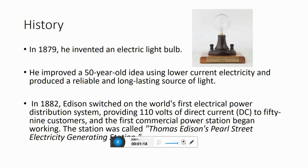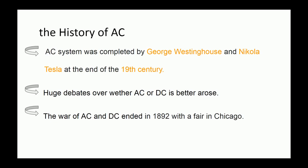Edison's system provided 110 volts of direct current. Next, I'll introduce alternating current, known as AC. The AC system was completed by George Westinghouse and Nikola Tesla at the end of the 19th century. Huge debates over whether AC or DC is better arose through the century. The war of AC and DC ended in 1892 with a fair in Chicago.